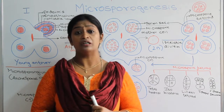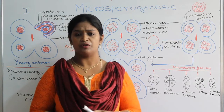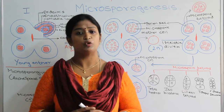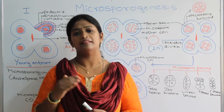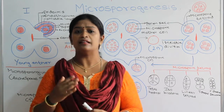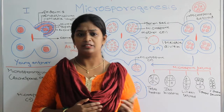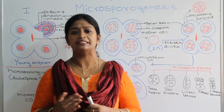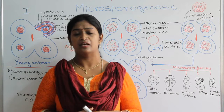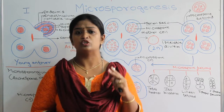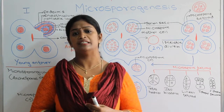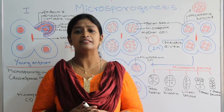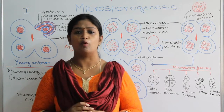Let's study about the main reproductive unit of the flower. The stamen consists of two parts: the anther and the filament. The anther is monothecous, that is it consists of one lobe with two pollen sacs, mainly seen in the Malvaceae family flowers, whereas the dithecous anther consists of four pollen sacs.